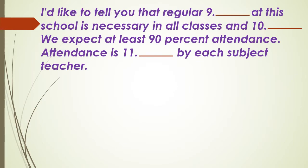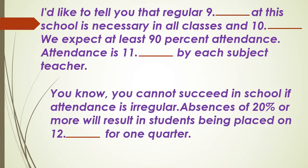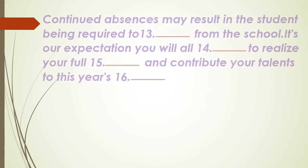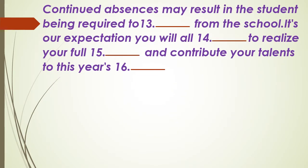I'd like to tell you that regular attendance at this school is necessary in all classes and lectures. We expect at least 90% attendance. Attendance is taken by each subject teacher. You cannot succeed in school if attendance is irregular. Absences of 20% or more will result in students being placed on probation for one quarter. Continued absences may result in the student being required to withdraw from the school.